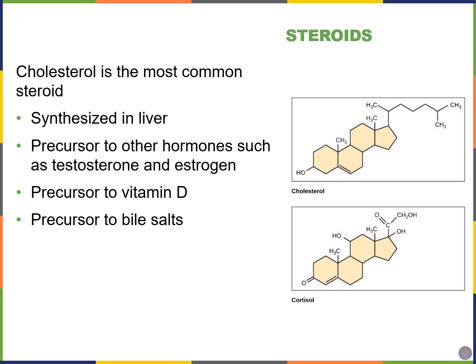Cholesterol is the most common steroid and it gets a bad rap, but it's actually pretty important. Our liver produces cholesterol and we need it to make hormones such as testosterone and estrogen. We also need it to make vitamin D and bile salts, which are important in lipid breakdown — when we're eating fats, we use bile salts to break them down.